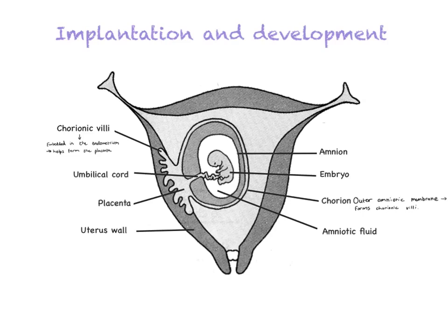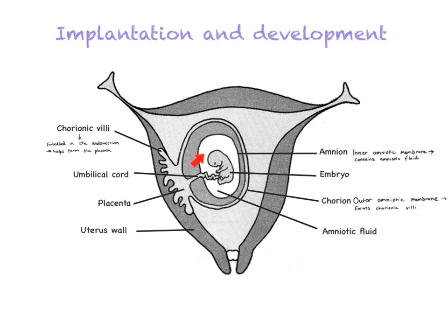The next membrane is the amnion, which is inside the chorion. The amnion is the inner amniotic membrane which contains amniotic fluid. You may have heard of amniocentesis, where fluid from around the embryo or fetus is removed and analyzed for any genetic abnormalities — that's how they diagnose Down syndrome. The amnion is the membrane that encloses the amniotic fluid.